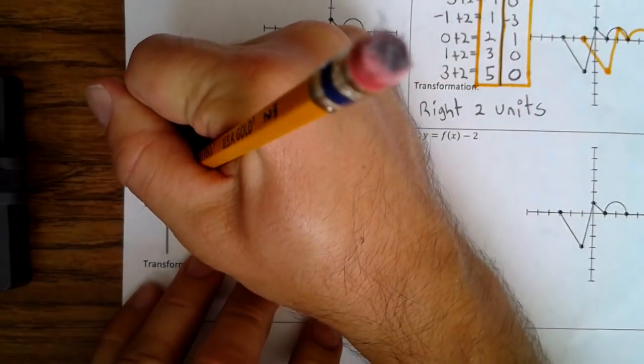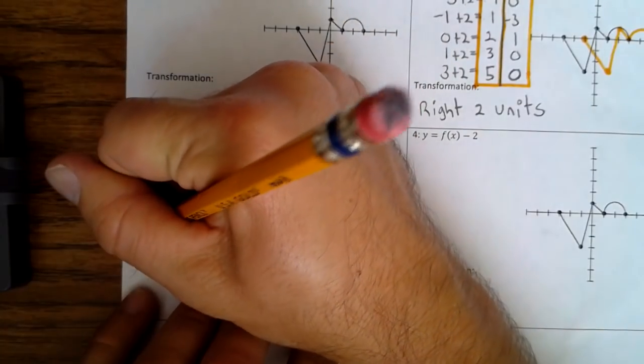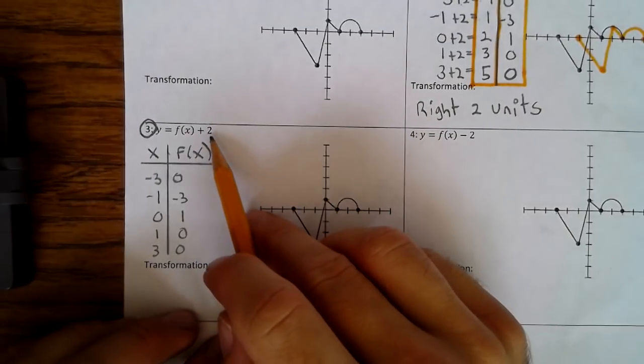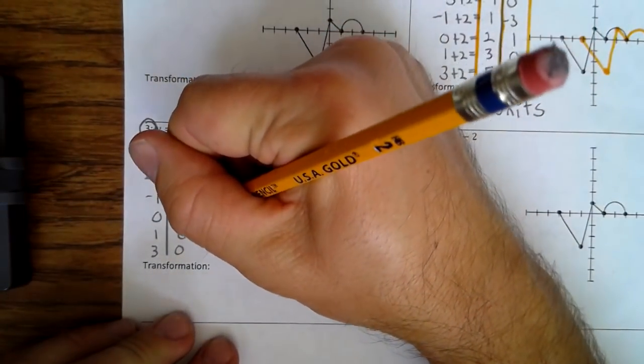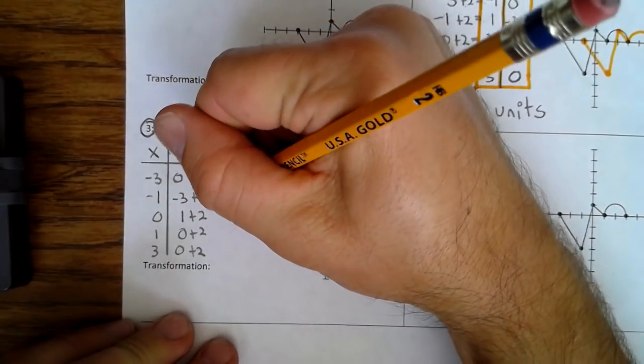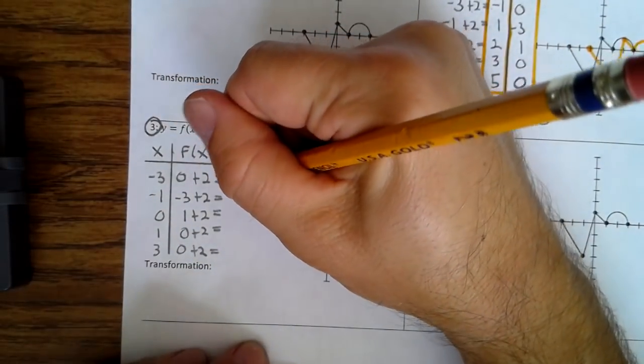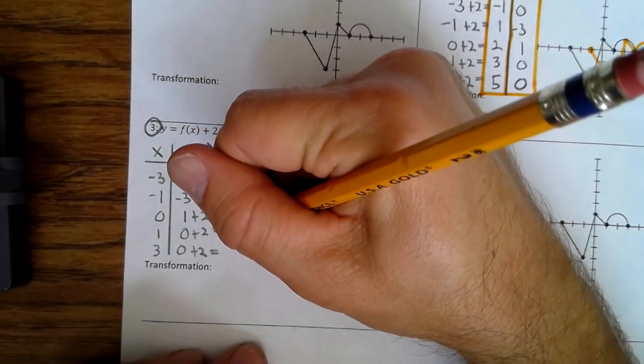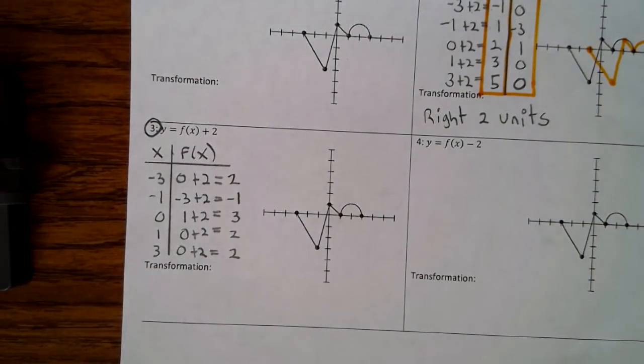So we go back to our original points. So negative 3, 0. Negative 1, negative 3. 0, 1. 1, 0. 3, 0. So as we're going up, we're going to add 2 to the f(x) values. So 0 plus 2 is 2. Negative 3 plus 2 is negative 1. 1 plus 2 is 3. 0 plus 2 is 2. 0 plus 2 is 2.